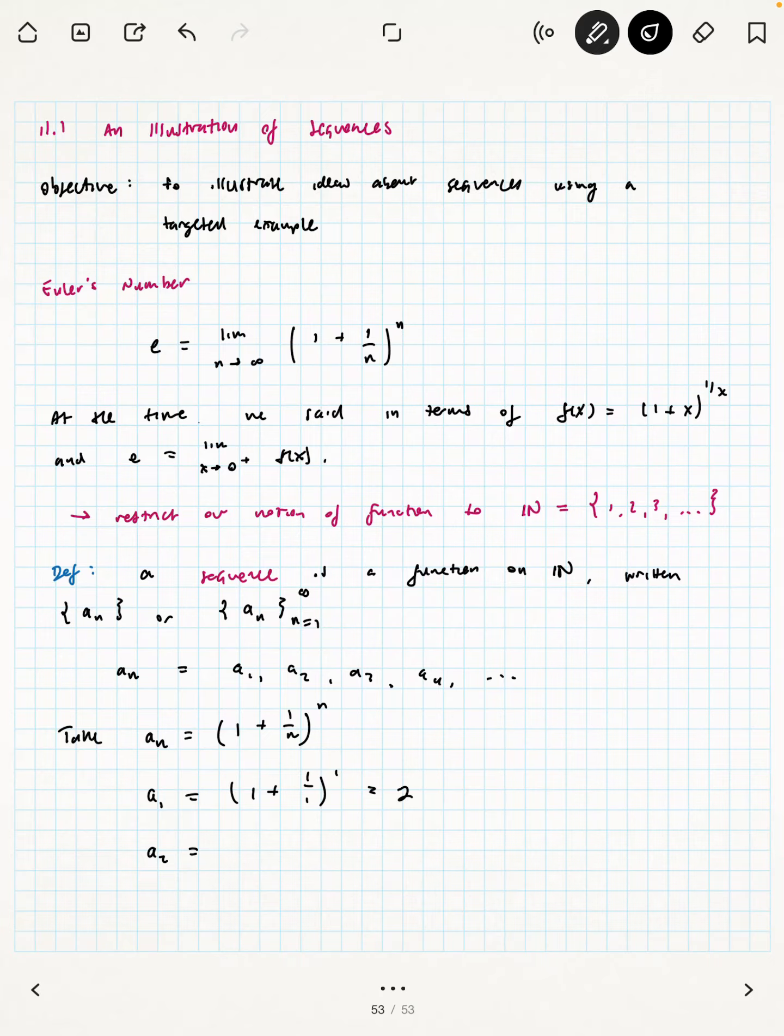a_2 is (1 + 1/2)^2, which is (3/2)^2 or 9/4. a_3 is (1 + 1/3)^3, which is (4/3)^3 or 64/27, and so on. These are just the first few terms in the sequence.